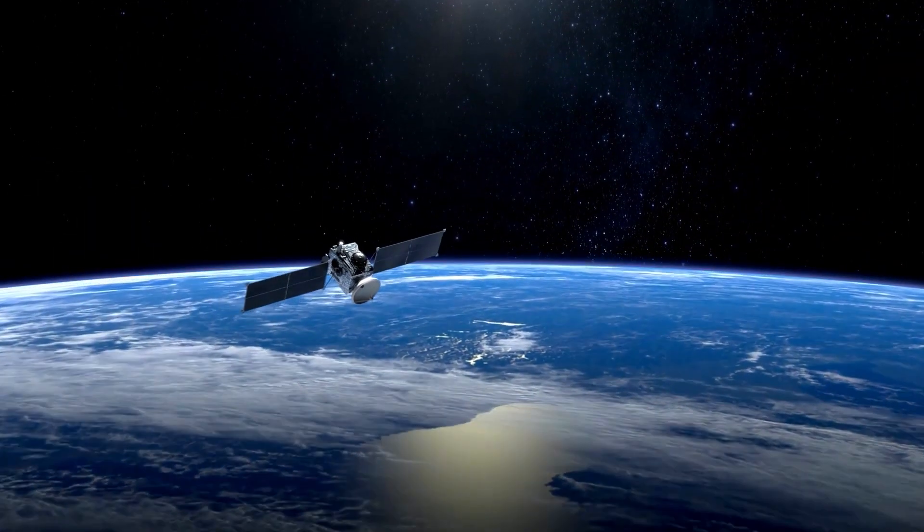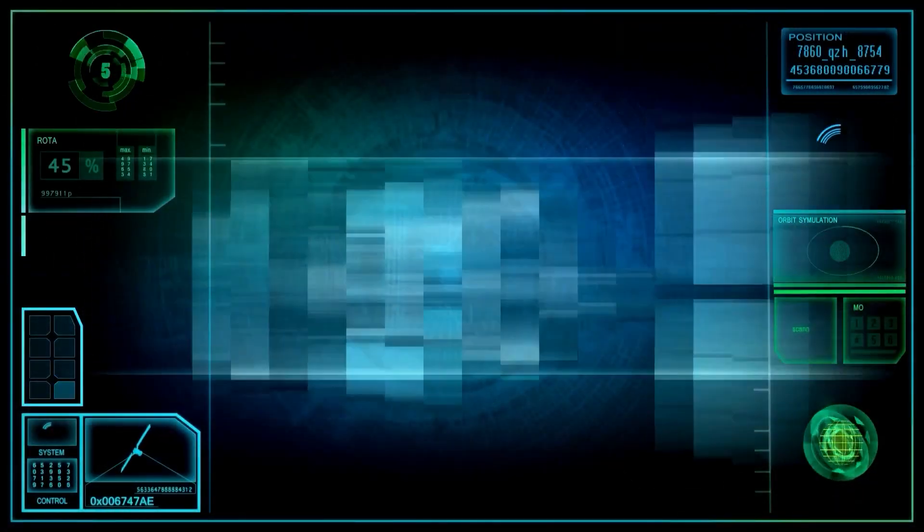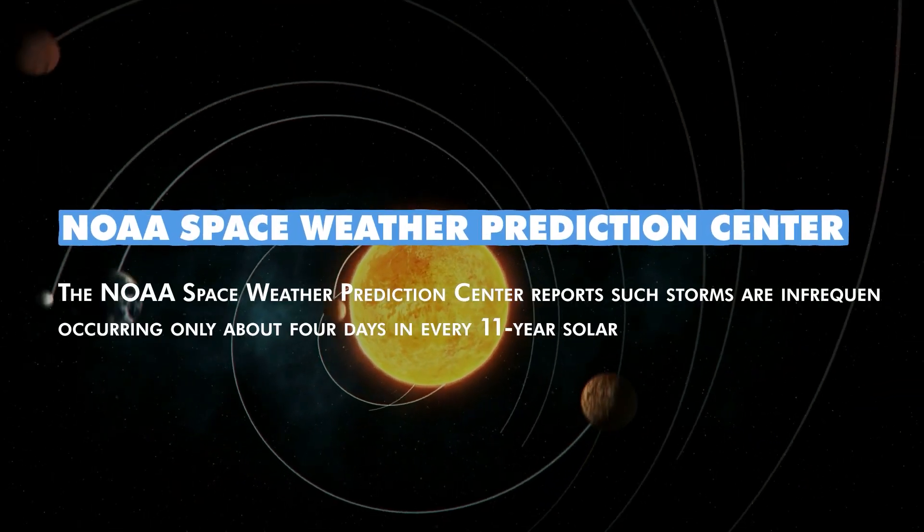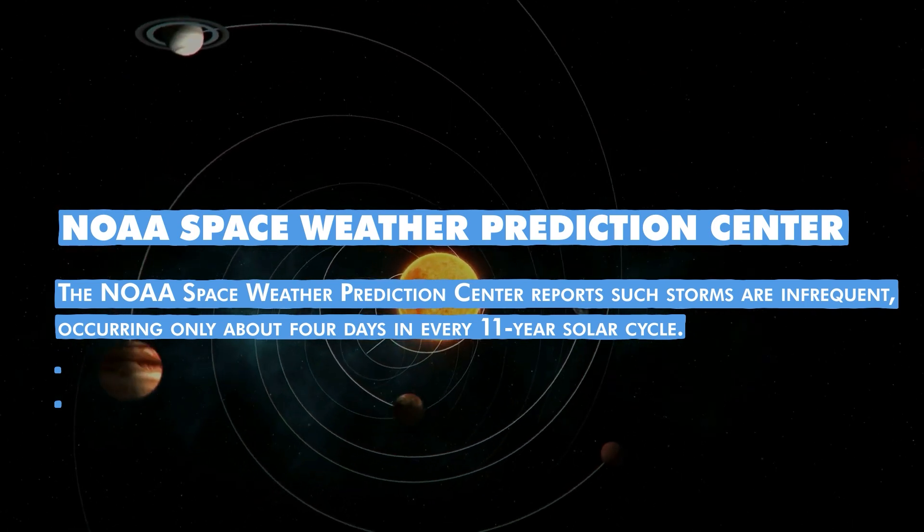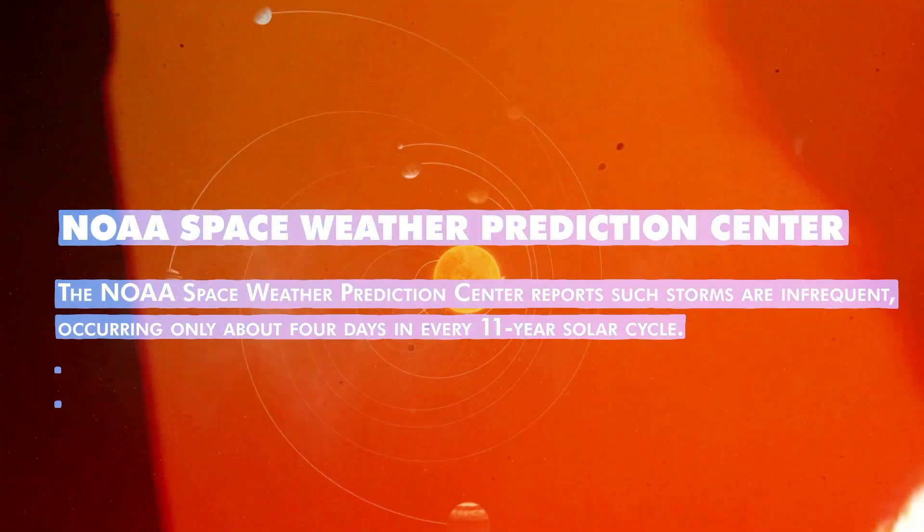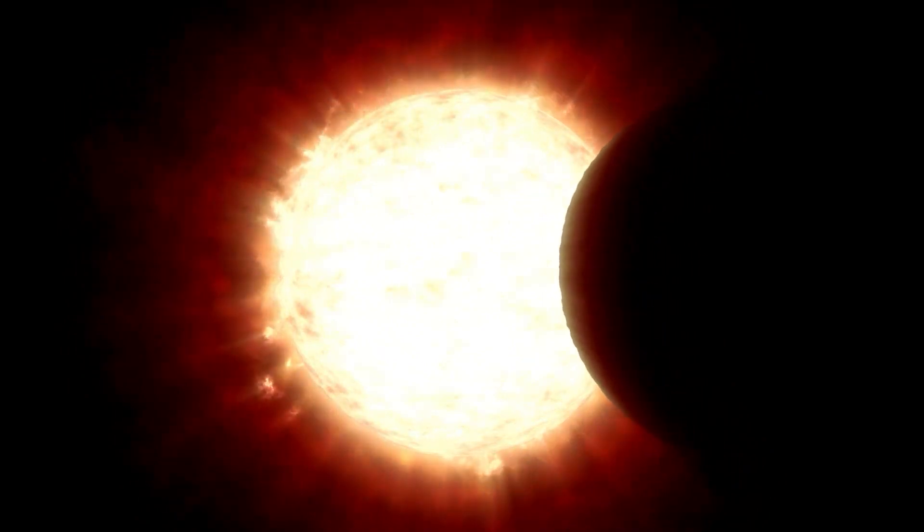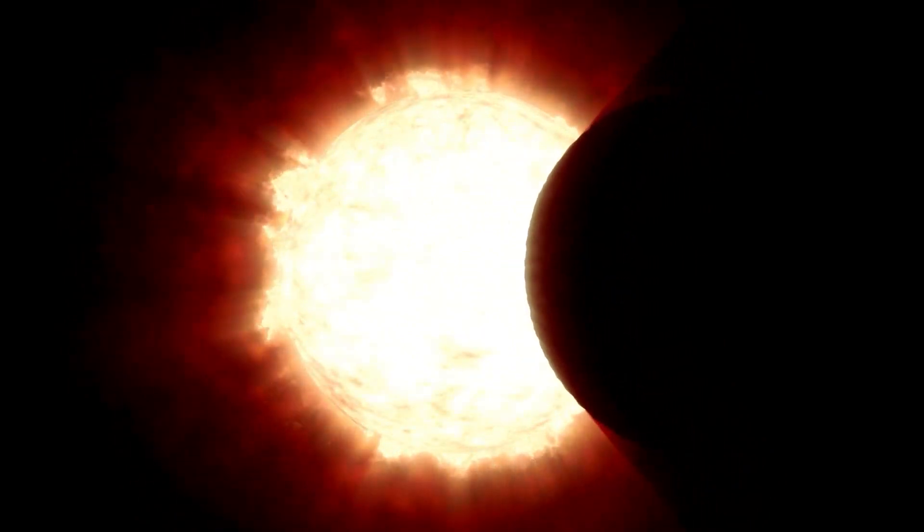The electromagnetic interference produced by these storms can severely disrupt radio transmissions, rendering them inoperative on a global scale for several days. Satellite systems aren't spared either, and disruptions may affect satellite navigation for a day or two, severely hindering the aviation industry. The NOAA Space Weather Prediction Center reports such storms are infrequent, occurring only about four days in every 11-year solar cycle.